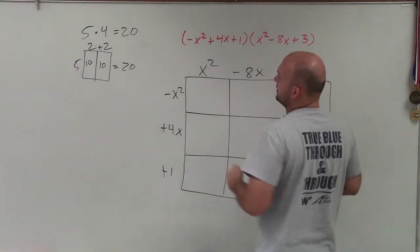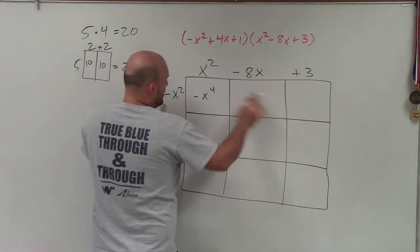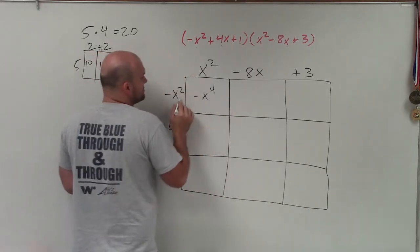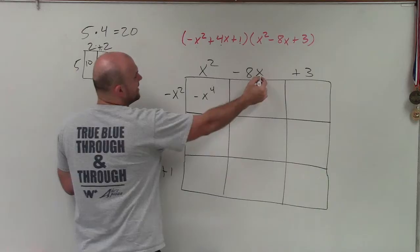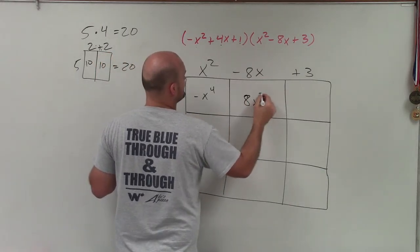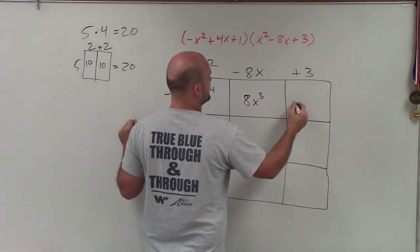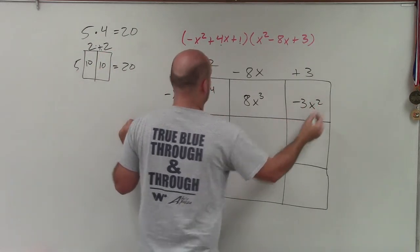So now we just need to figure out the area. So to find the area here, I have negative x squared times x squared. That's going to be a negative x to the fourth. And then here, the length is always going to be negative x squared. So negative x squared now times negative 8x is going to be a positive 8x cubed. And negative x squared times positive 3 is a negative 3x squared.